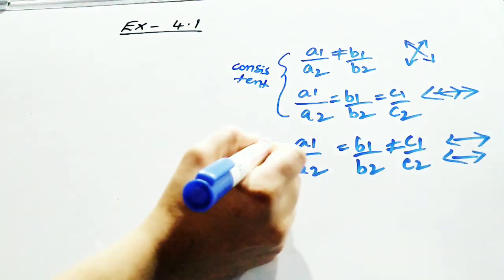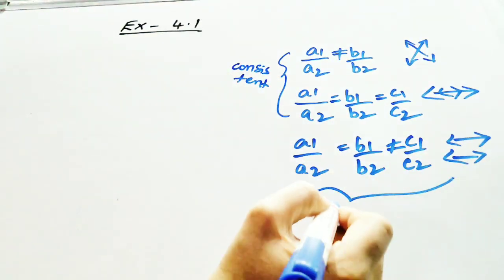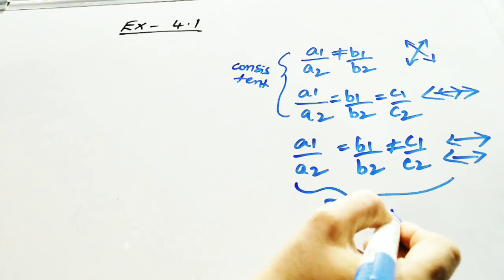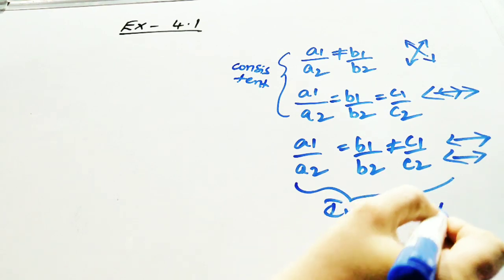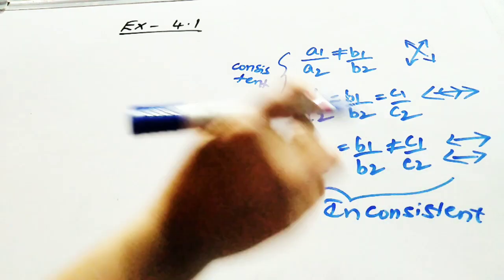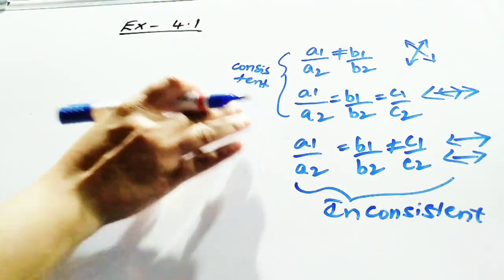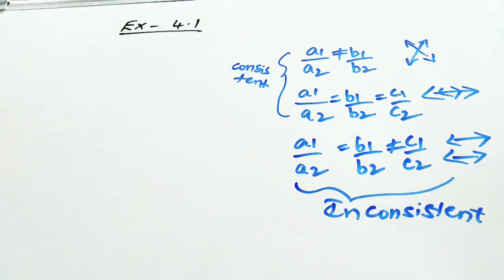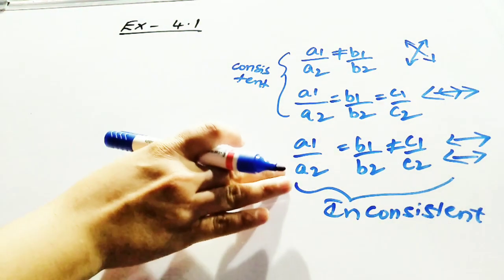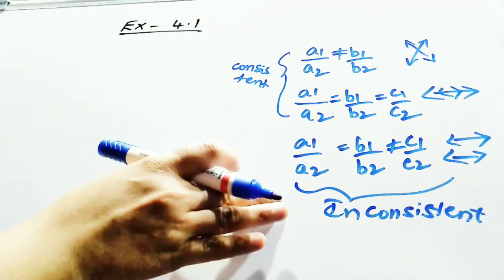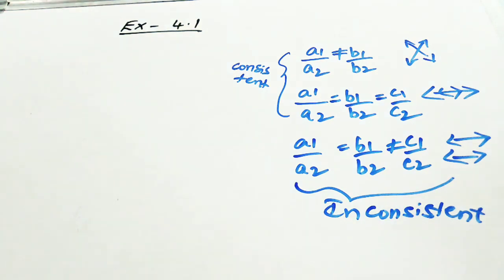It is called consistent, and this is called inconsistent pair of linear equations. If any equation is in any one of these forms, you can call it a consistent pair of linear equations. If your equation comes in this form, you can say it is an inconsistent pair of linear equations. Let us do some problems related to comparing ratios.